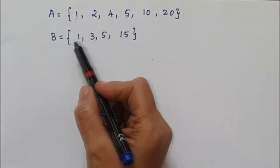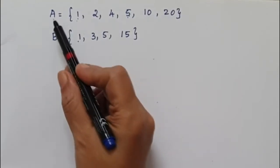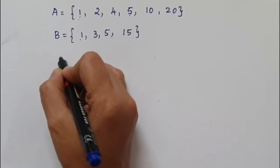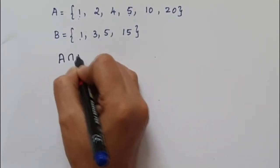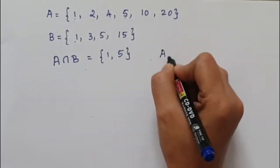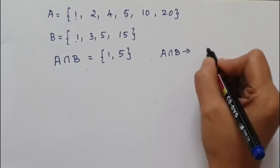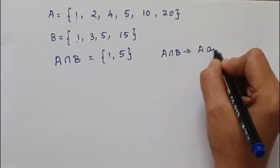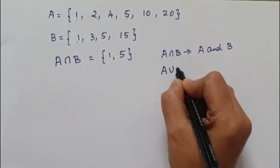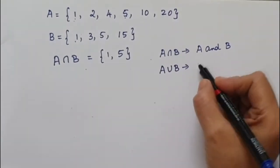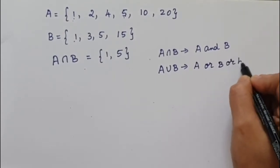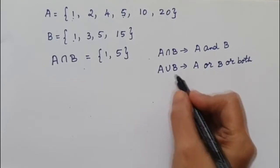The elements 1 and 5 are both in set A and set B, and this is called the intersection of A and B. That is, A intersection B equals {1, 5}. A intersection B means the element has to be present in both A and B.